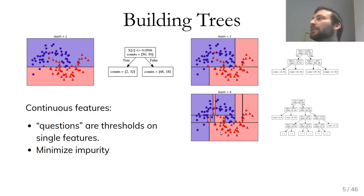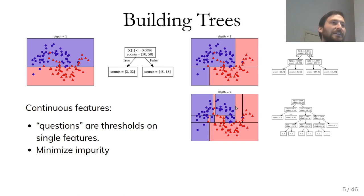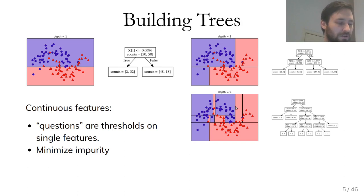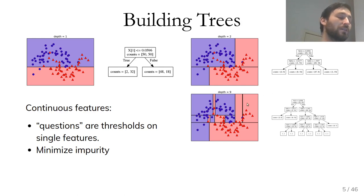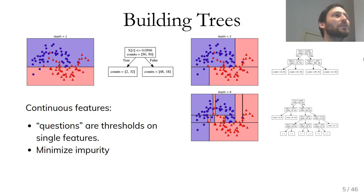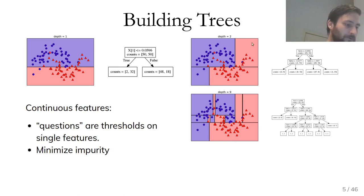With depth nine, all leaves are pure and we've perfectly split the dataset into a partition of areas with red points and areas with blue points. A good way to think about trees is that each leaf corresponds to one region — also called terminal regions — in the input space. All regions corresponding to all leaves together span the whole input space. For depth two, each leaf corresponds to one area in this 2D plot.